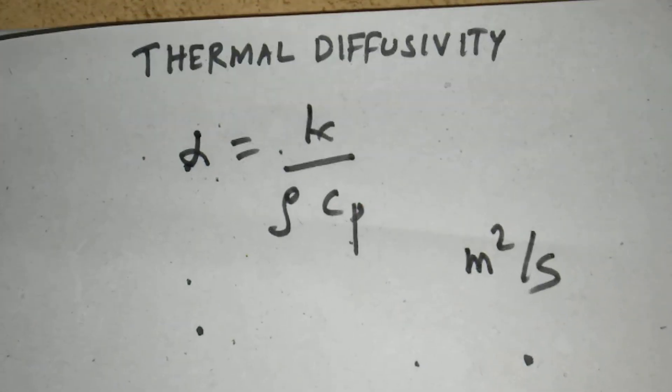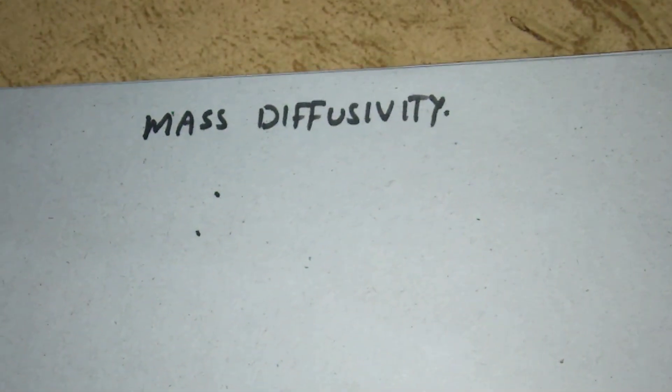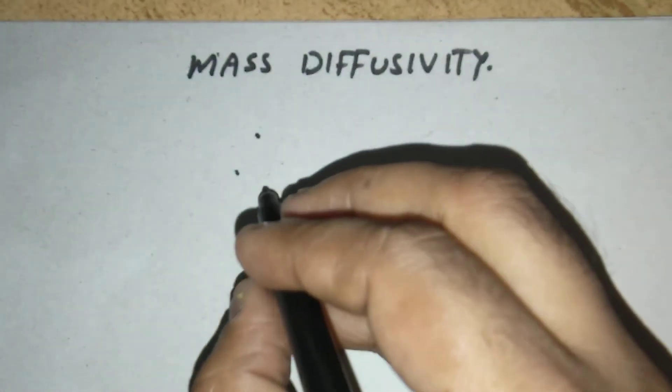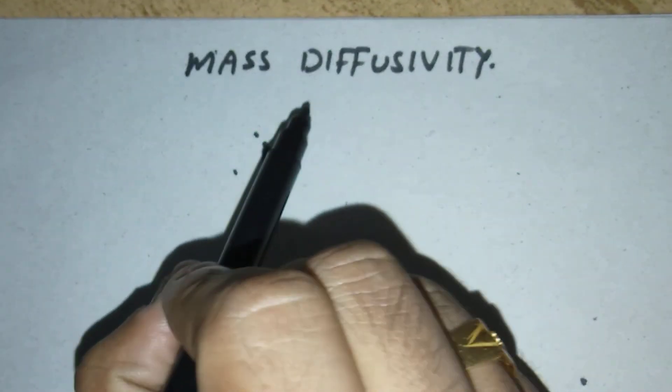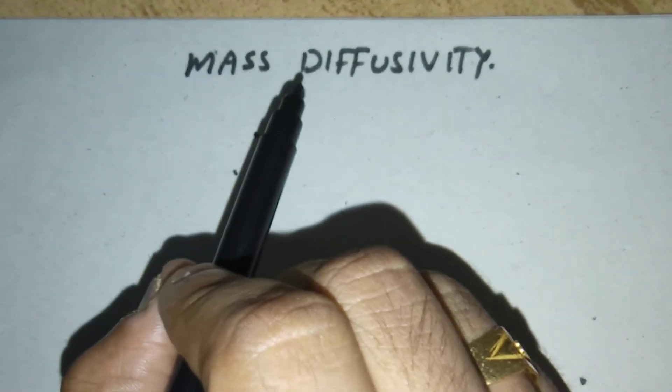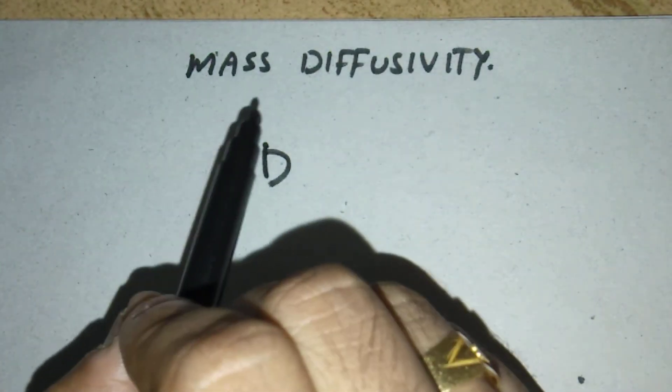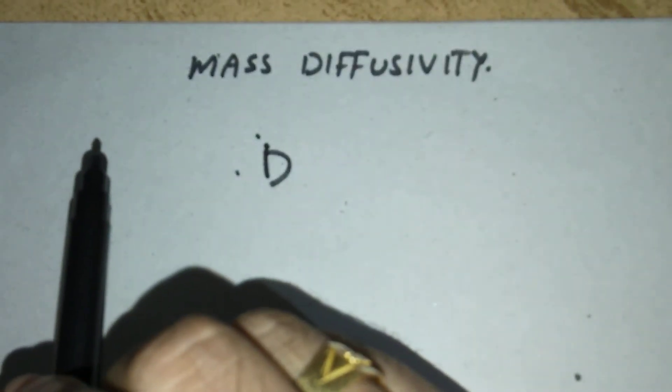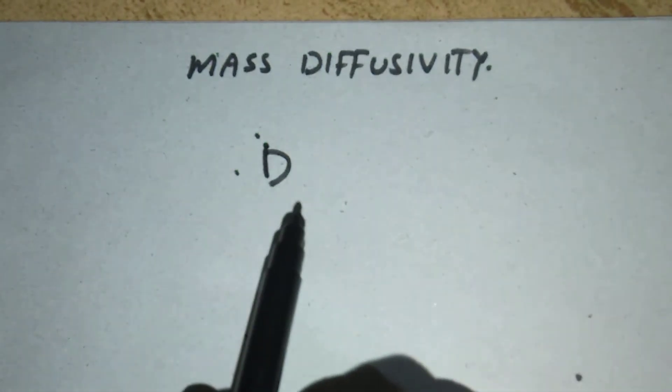Then next, what is mass diffusivity? It is the diffusion coefficient. It is the measure of how fast mass transfer takes place, how quickly a material diffuses into another. That is called mass diffusivity or diffusion coefficient.